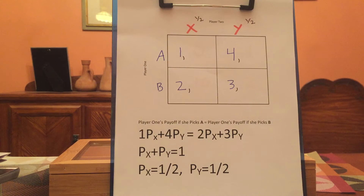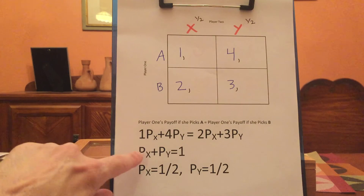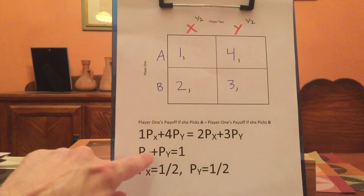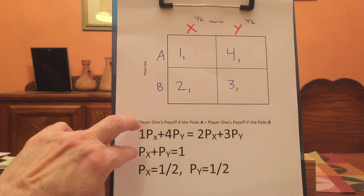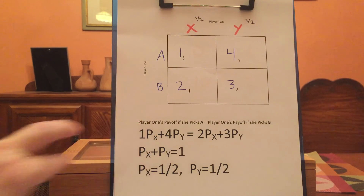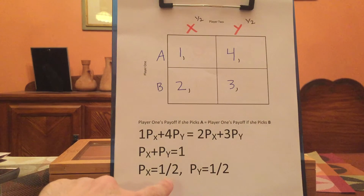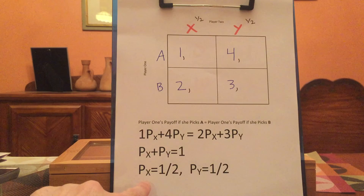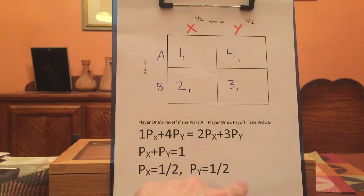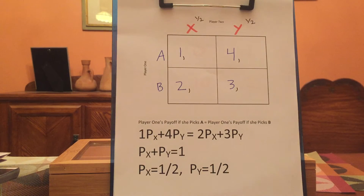We also know that the sum of the probabilities for what you do has to be one, so this gives us the second equation. Now we have two equations and two unknowns. We can use basic high school algebra to solve, and if we do solve, we get p-sub-x equals one half and p-sub-y equals one half.